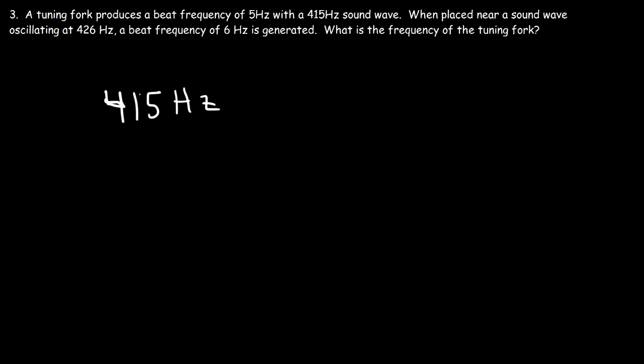Let's focus on the 415 frequency. If a beat frequency of 5 Hertz is produced with this sound and a tuning fork, that means the frequency of the tuning fork could be two numbers: it could be 415 minus 5, which is 410, or it could be 415 plus 5, which is 420.